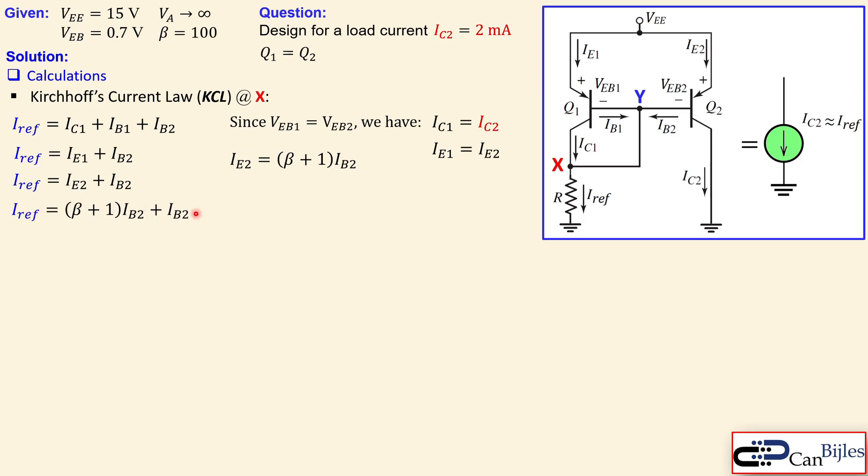That's shown here. Now we have an expression on the right hand side, which has only IB2 as the unknown. So we can now combine this and make this simple expression. So the IRF is now equal to this. So that's a nice expression.